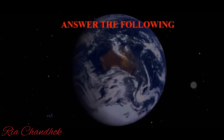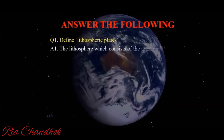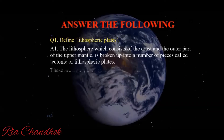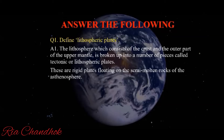First question: define lithospheric plates. The lithosphere consists of the crust and the outer part of the upper mantle. This lithosphere is broken up into a number of pieces called tectonic or lithospheric plates. These lithospheric plates are rigid plates that float on the semi-molten rocks of the asthenosphere.